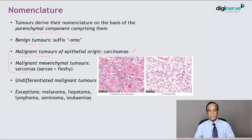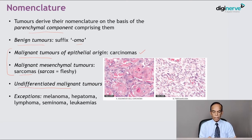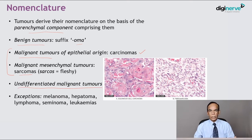There are some malignant tumours where it is not possible to determine whether the tumour is of epithelial or mesenchymal origin because the tumour cells are too poorly differentiated — these are called undifferentiated malignant tumours and are highly malignant. In summary: for benign tumours, cell of origin plus OMA; for malignant epithelial tumours, cell of origin plus carcinoma; for malignant mesenchymal tumours, cell of origin plus sarcoma.